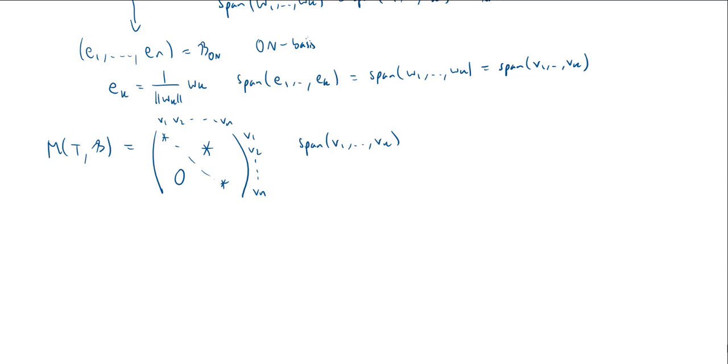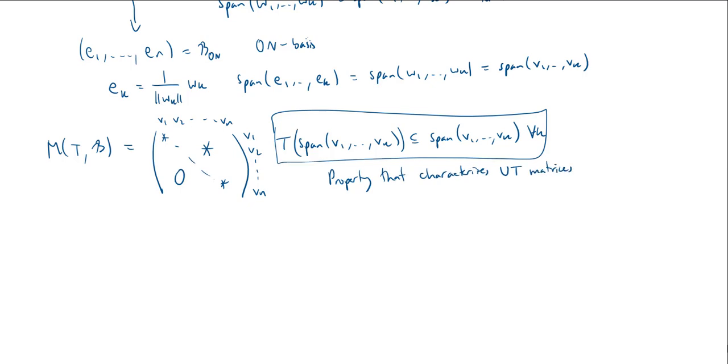Well, when you apply T to V1, you just get a multiple of V1. When you apply T to V2, you get a multiple of V1 plus a multiple of V2, and then you get all zeros. So in general, the span of V1 through VK is contained - when I apply T to it, this will be contained in the span of V1 through VK. And you remember, this actually was a property. Of course, this is for all K. This is a property that characterizes upper triangular matrices.